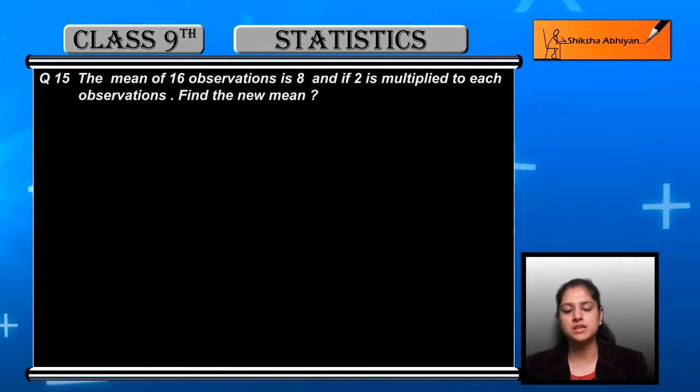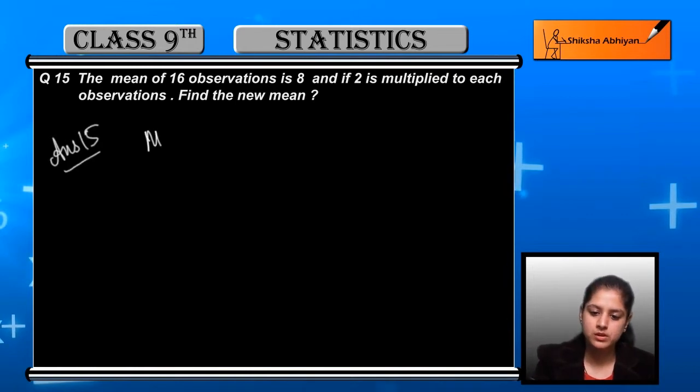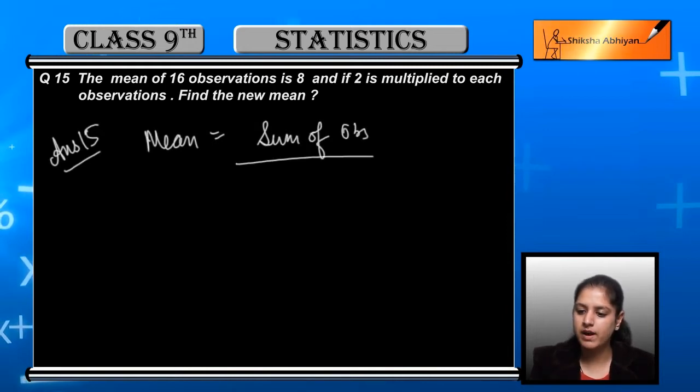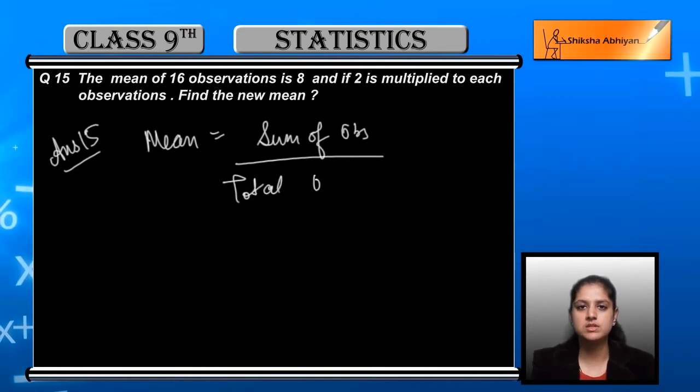If we multiply all 16 observations by 2, what will happen to the mean? First, recall the formula: mean equals sum of observations divided by total observations. In this case, the mean given is 8.